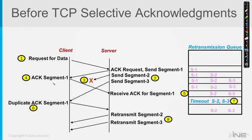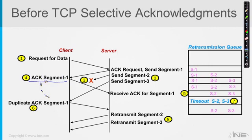In step number four, segment number one first hits the client. Because these segments are coming in spaced just milliseconds apart, what's most likely going to happen is segment one and segment three are going to hit the client almost at the same time. So when the CPU processes things, TCP will say: I've got two segments in my queue that just came in — segment one and segment three.